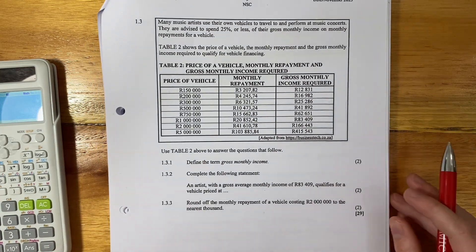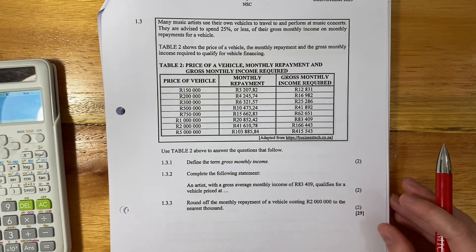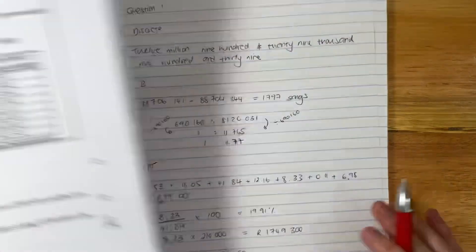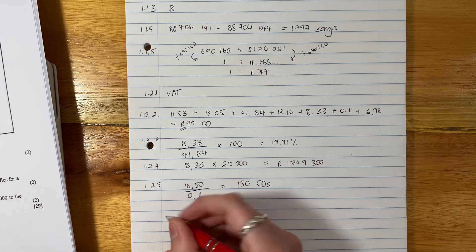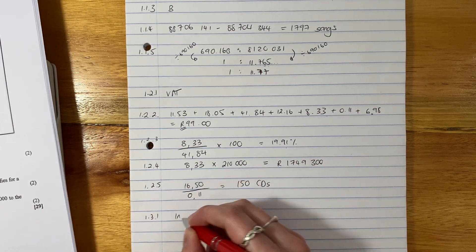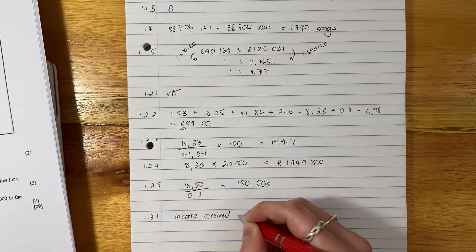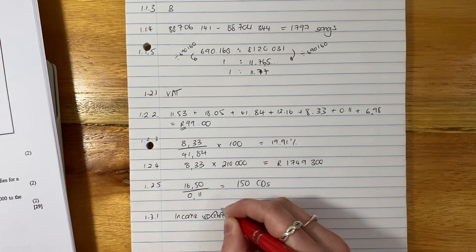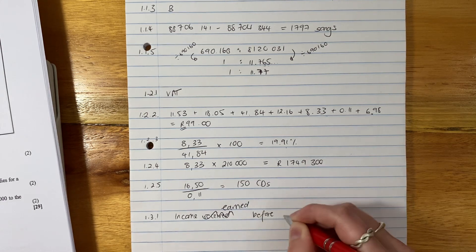1.3.1. Define the term gross monthly income. Well, not a difficult one. It is your income. Let me make sure you can see there. Great. 1.3.1. It is income received or income earned, it's probably a better way. Income earned before deductions.